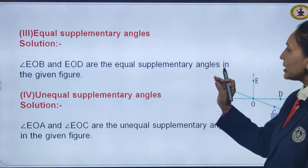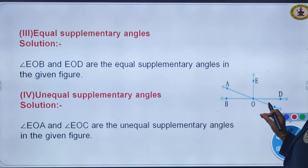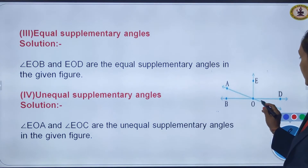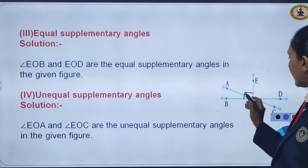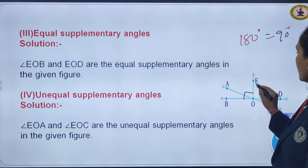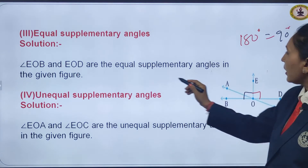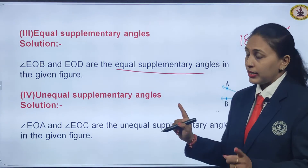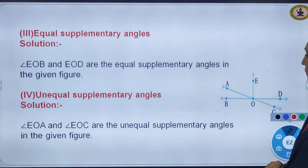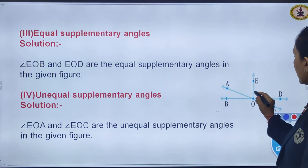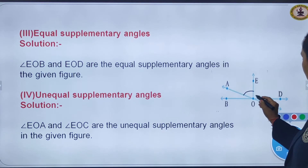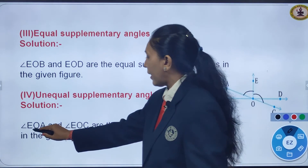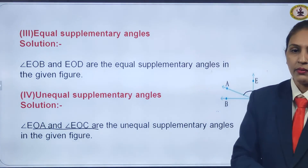Next, equal supplementary angles — both angles should be supplementary and equal, so each would be 90 degrees. Angle EOB and angle EOD are equal supplementary angles in the given figure. Then, unequal supplementary angles — angle EOA and angle EOC are supplementary because they form a linear pair but they are not equal, so they are unequal supplementary angles.